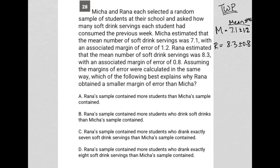The next sentence says: assuming the margins of error were calculated in the same way, which of the following best explains why Rana obtained a smaller margin of error than Misha? So this all comes down to how do you get smaller margins of error, which means how do you get more reliable data. A smaller margin of error means that the mean you calculated is more reliable. So let's see what the answers say.